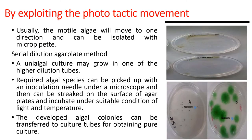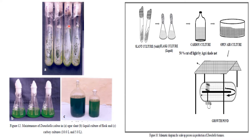By exploiting the phototactic movement — usually motile algae will move in one direction — and can be isolated with a micro-pipette. Serial dilution agar plate method: uni-algal culture may grow in one of the higher dilution tubes. The required algal species can be picked up with an inoculation needle under a microscope and then streaked on the surface of an agar plate and incubated under suitable conditions of light and temperature. The developed algal colonies can be transferred to a culture tube for obtaining a pure culture.